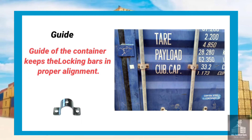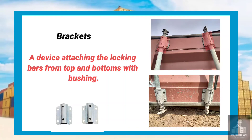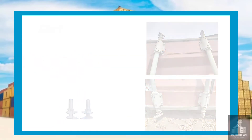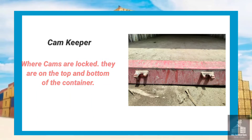Guide: keeps the locking bars in proper alignment. Brackets: a device for attaching the locking bars from top and bottom with bushing. Cam: a device attached on the top and bottom of the locking bars to lock the doors. Cam keeper: where cams are locked — they are on the top and bottom of the container door.